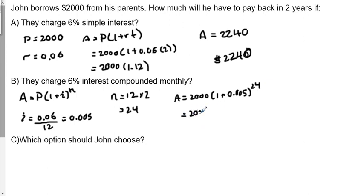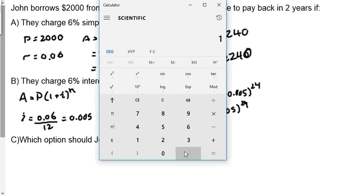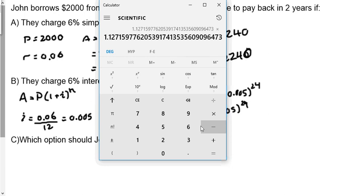Which is going to be 2,000 times 1.005 to the 24. Let's get my calculator. 1.005 to the exponent 24, and we're going to multiply that by 2,000.